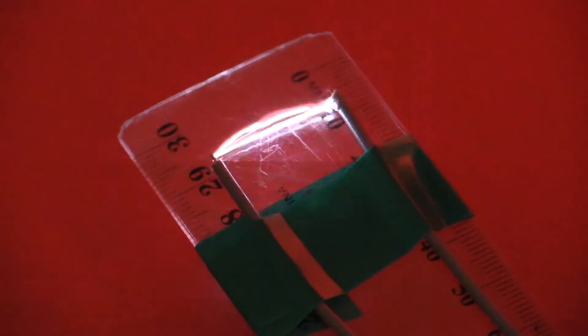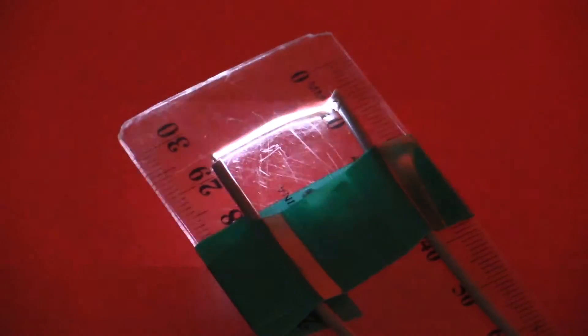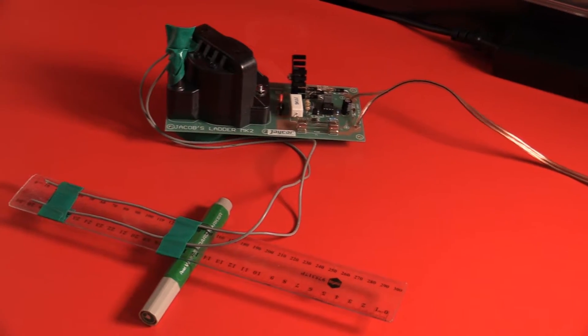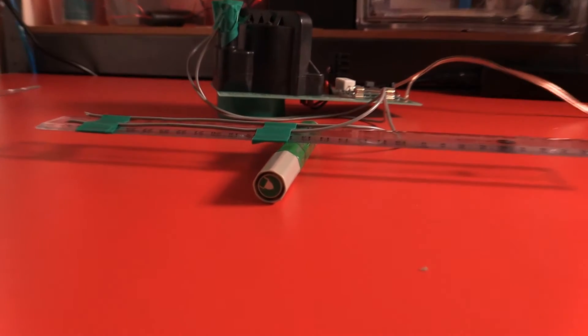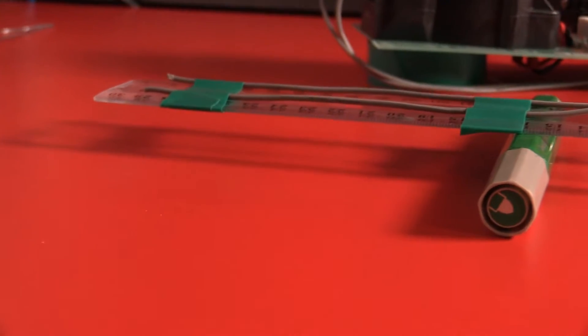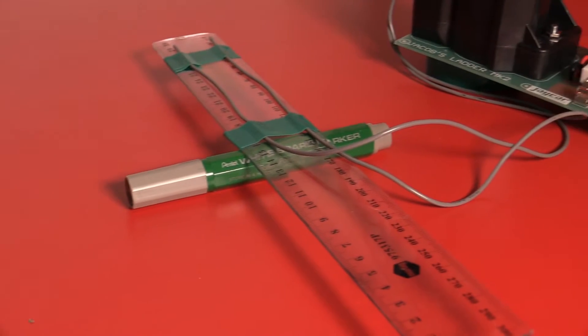So could that buoyancy effect actually be used to lift something useful? The first problem is that the plasma is not solid and therefore it's not able to transfer lift to the object that's generating it. To demonstrate this, we can put the Jacob's Ladder electrodes on a finely balanced ruler, and when we switch it on, we can see that the balance isn't disturbed.